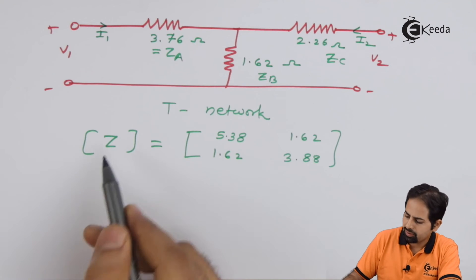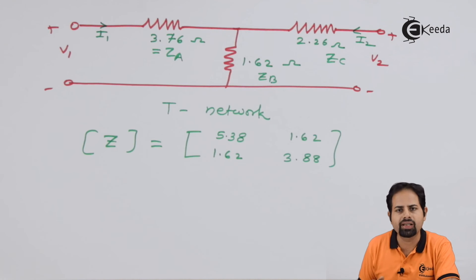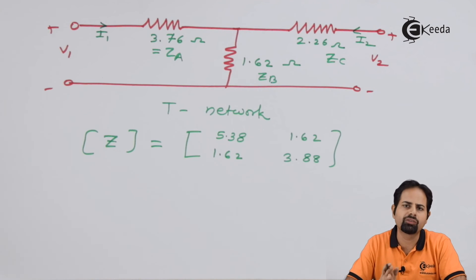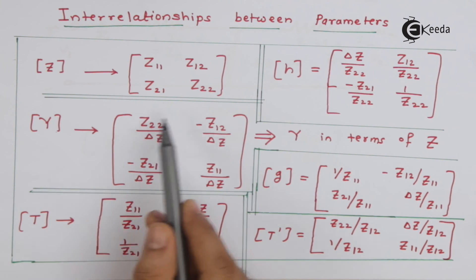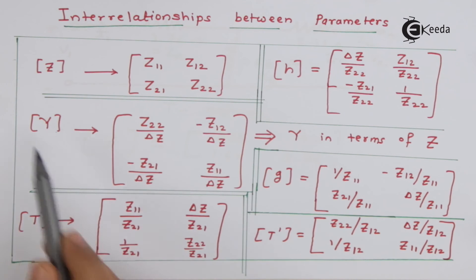So we have got the Z parameter, but that is not the required answer. The question is get Y parameter. So now we can use the conversion. Now we have Z parameters, but we want to get Y. So we can use this rule, that by knowing these Z parameters, we can easily get Y matrix. So we will make use of this and we will get the answer.